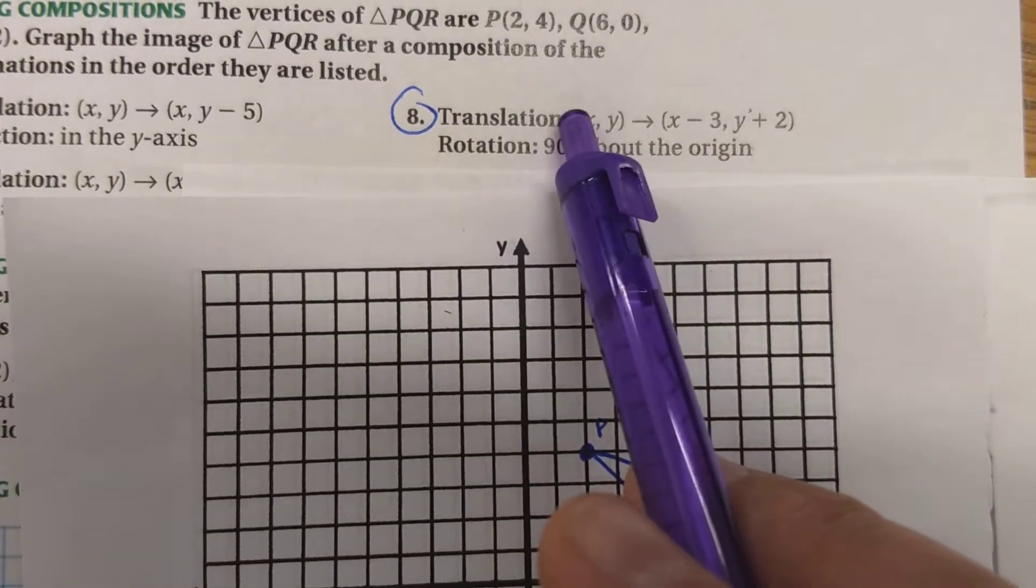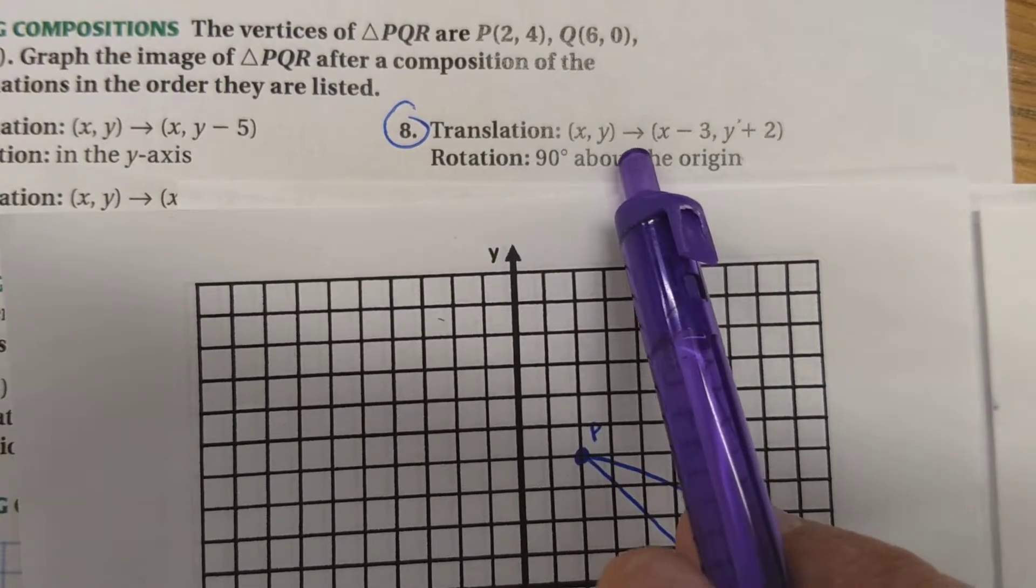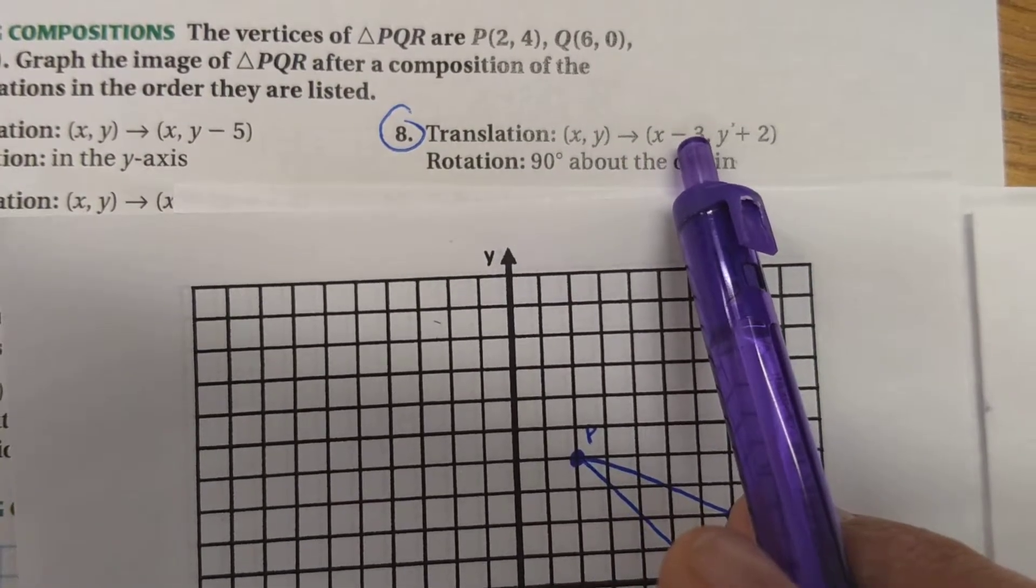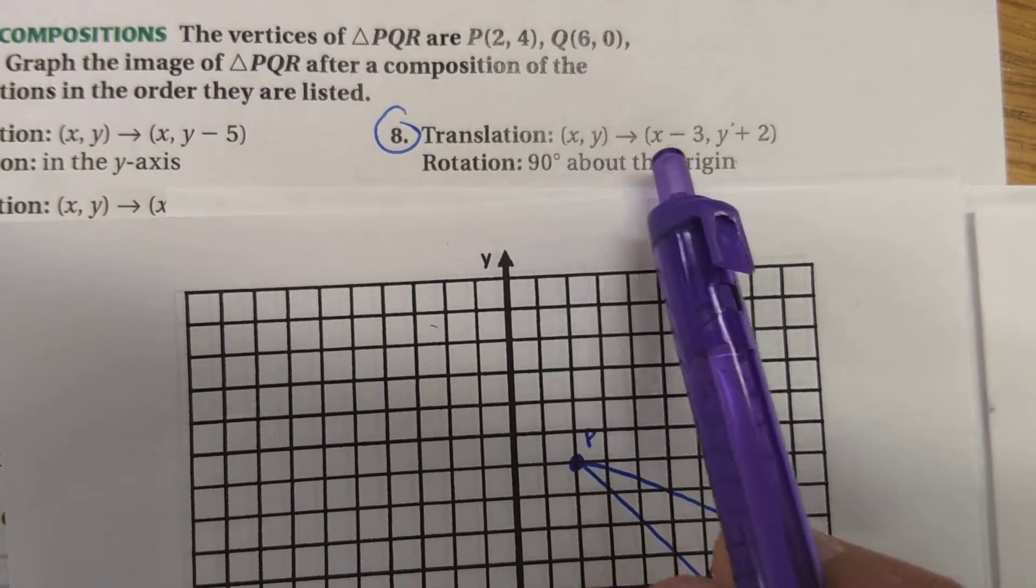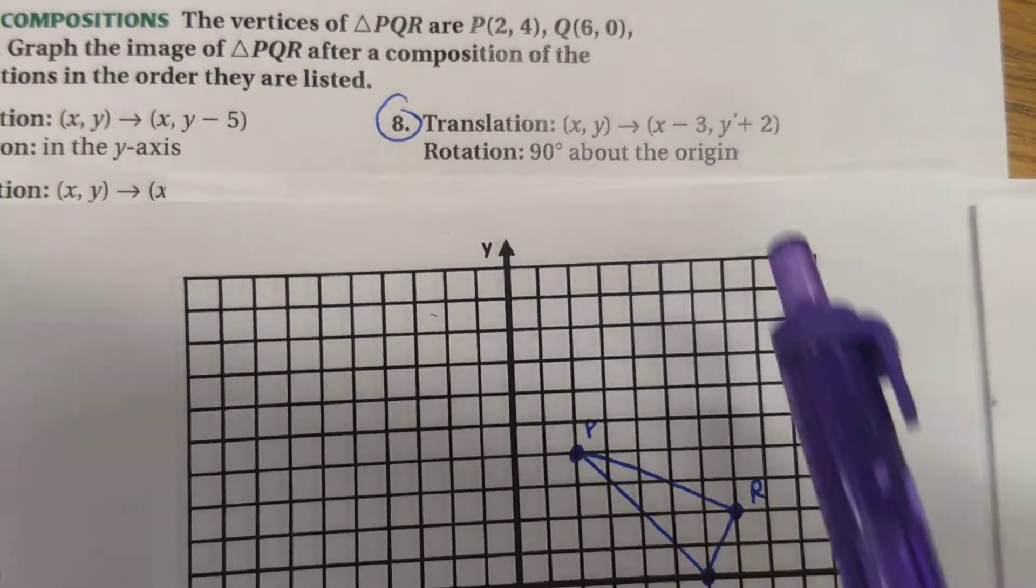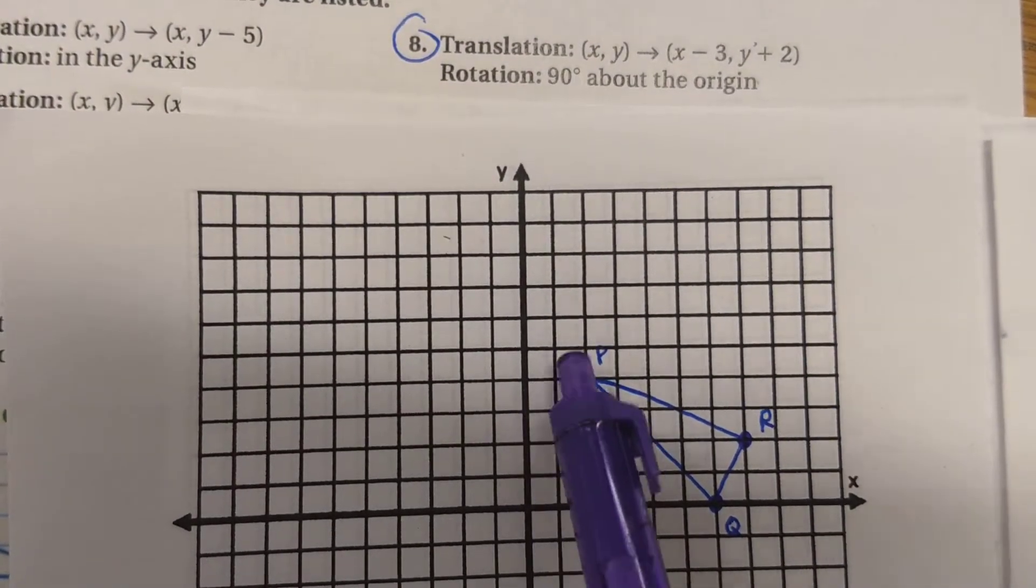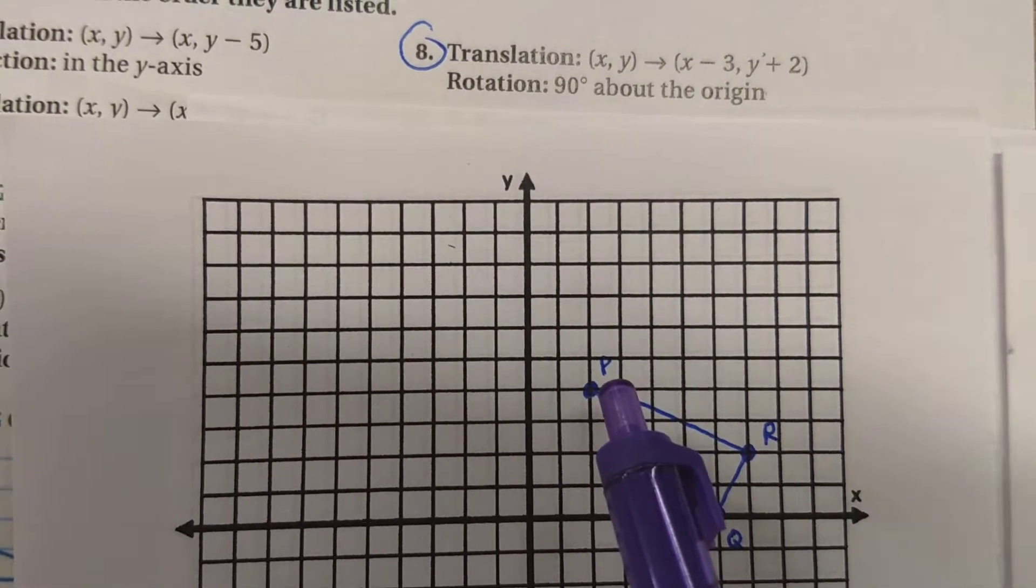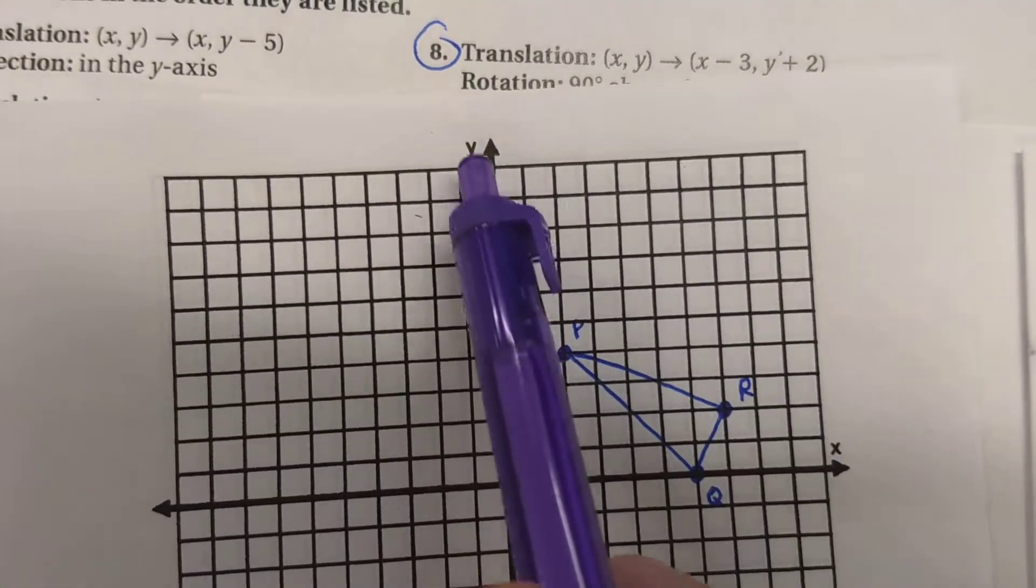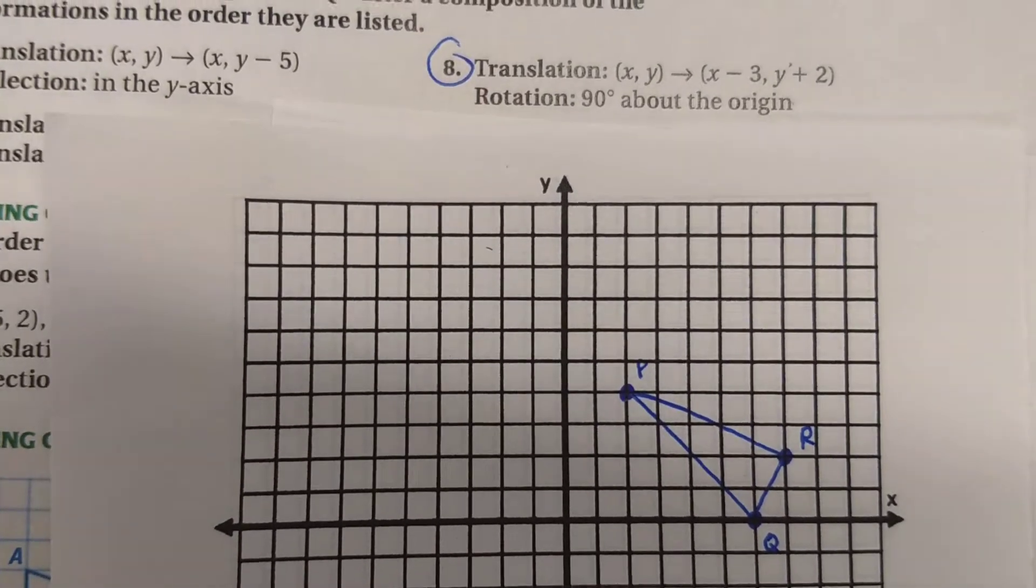First, we're going to translate it, and then we're going to rotate it. The translation is going to move every point three units over to the left, so changing our x to an x minus 3. It's going to take every y coordinate and move it up 2. So this whole thing is going to get shifted over to the left and up 2. That'll give us a new prime image for the triangle. And then once we've got that prime image, then we're going to rotate the entire thing 90 degrees about the origin.